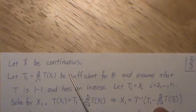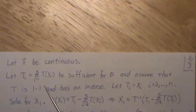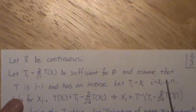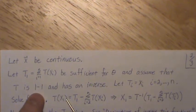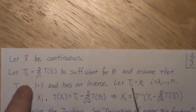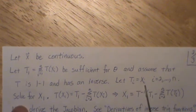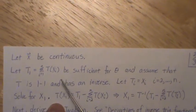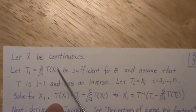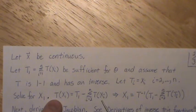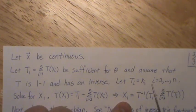So let's let x be continuous. We're going to let our sufficient statistic t1, which is the sum as described in part one, be sufficient for theta. We're going to assume that t is one-to-one and has an inverse. Then we define n minus 1 other variables: t2 is just x2, t3 is x3, all the way to tn is xn. Now let's back-solve for x1. If we take out the first term and subtract the remaining sum to the other side, and since t is one-to-one, we take its inverse to solve for x1.